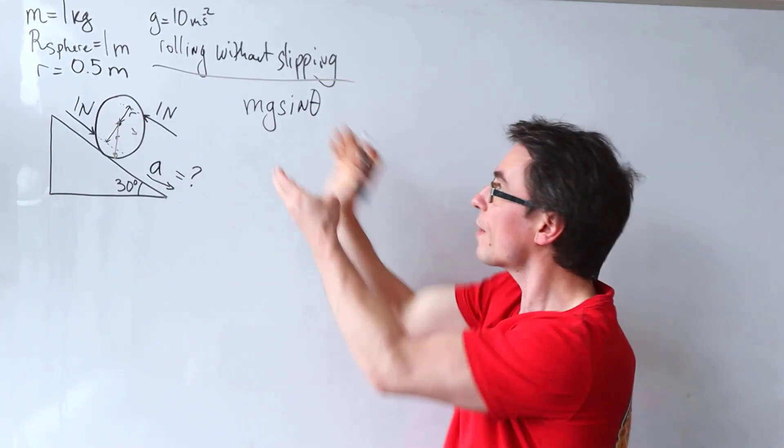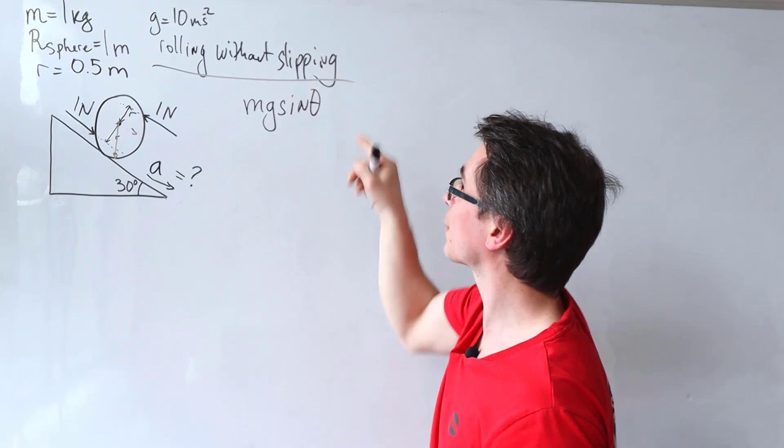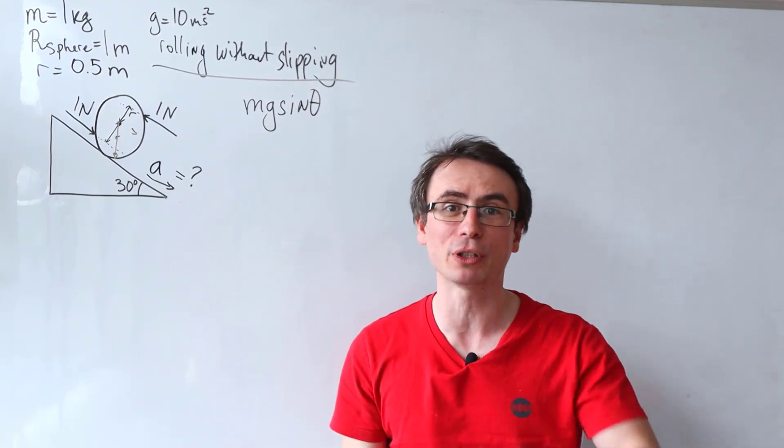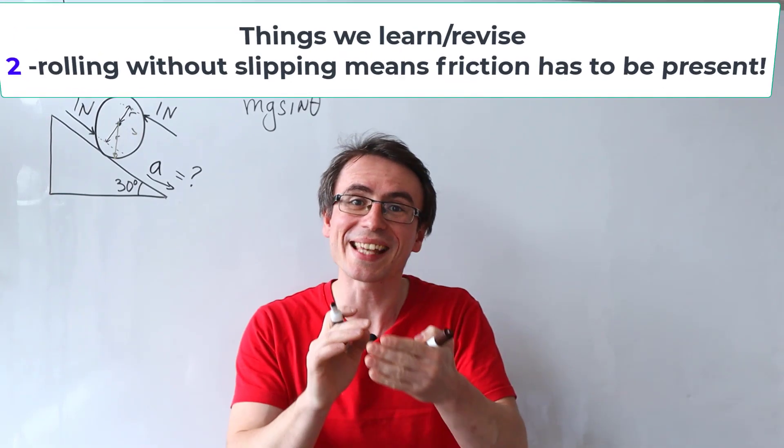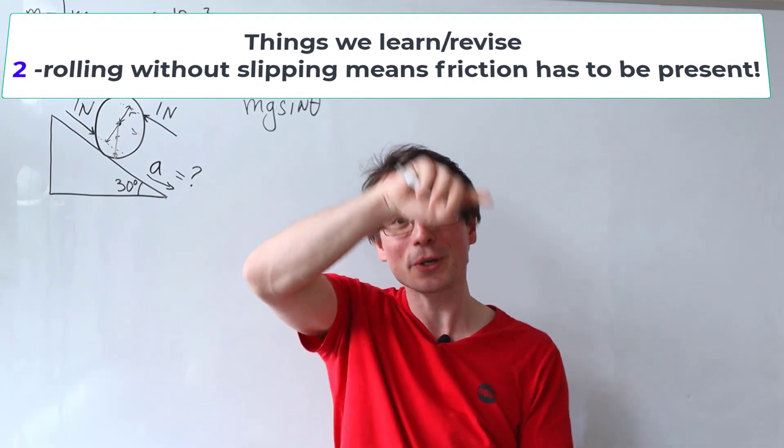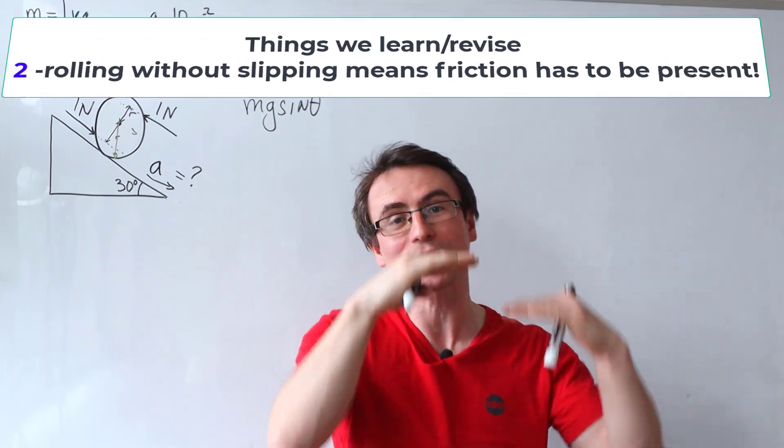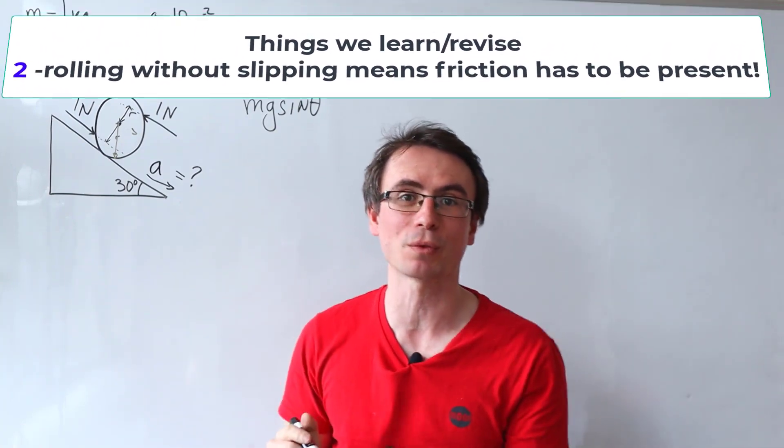And then though, if we have rolling without slipping, this is absolutely impossible without the presence of friction. For instance, a car trying to move off a pure ice, it will just be spinning, but it won't actually be rolling across the road.